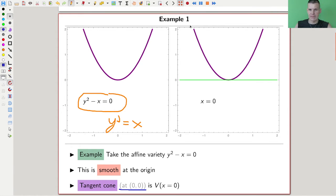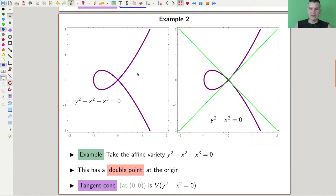So what happens if it's not smooth? Here's my favorite - the one with the double point. Here's the equation and the tangent cone is this little crossing type thing, and the crossing formula is this equation.